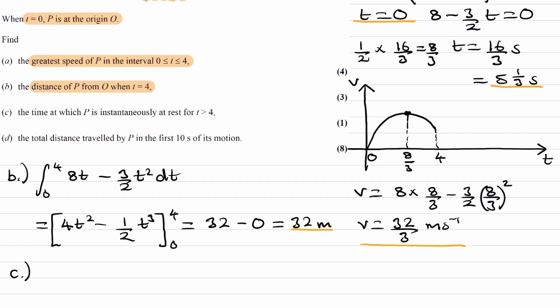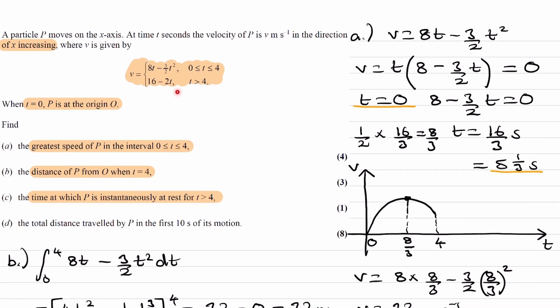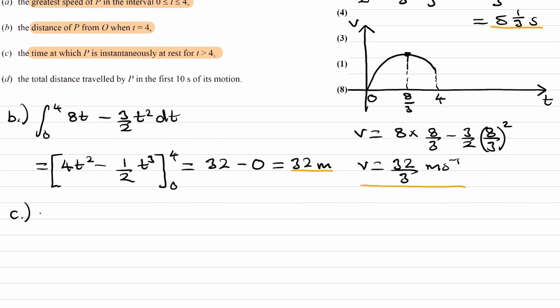For part C, we want to find the time at which P is instantaneously at rest for t greater than 4 seconds. Now we look at the second part of the function: v equals 16 minus 2t, for t greater than 4. We're trying to find when the particle is at rest, so v equals 0. Setting 16 minus 2t equal to 0, we get t equals 8 seconds.